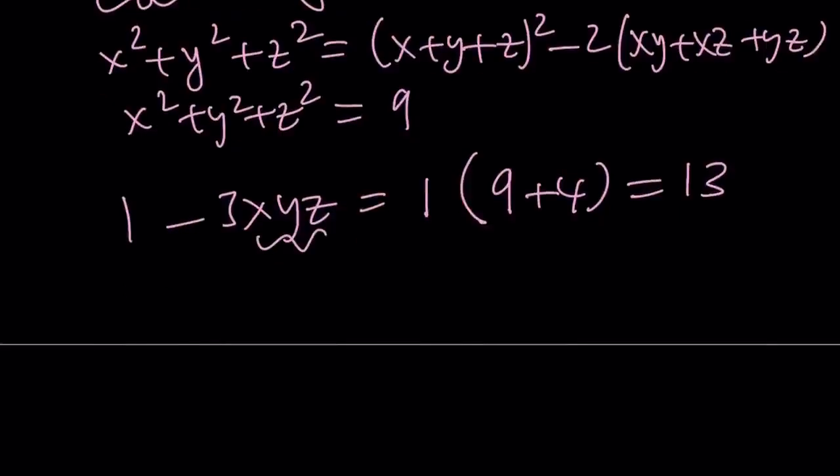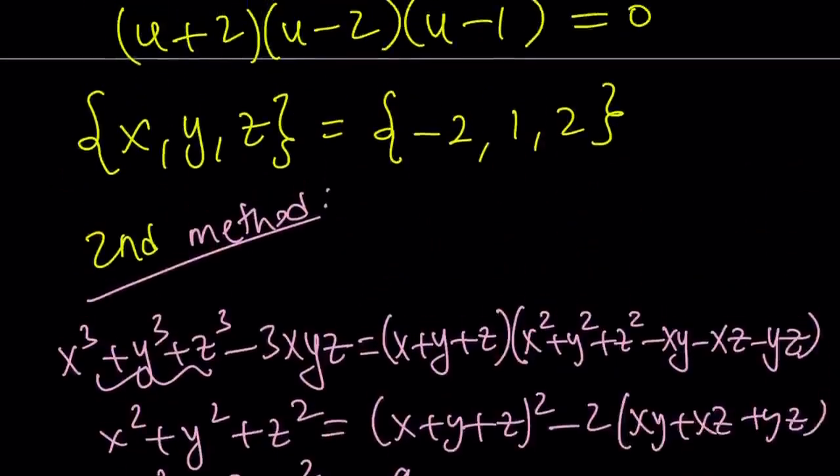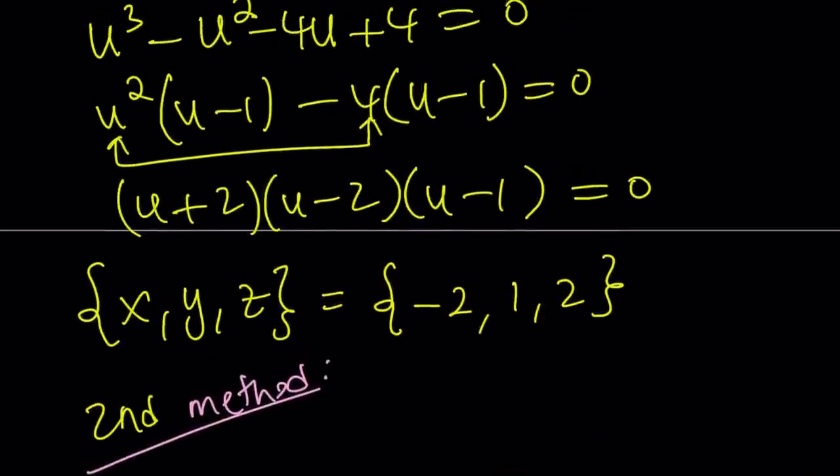And from here, xyz is going to be negative 4 as before. And of course by solving the system the same way, you're going to be arriving at the same solutions that we found before. And this brings us to the end of this video.